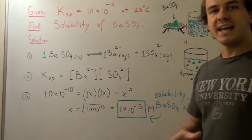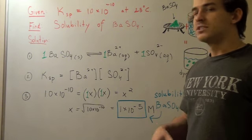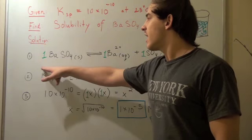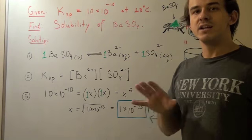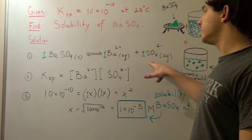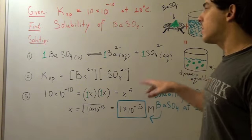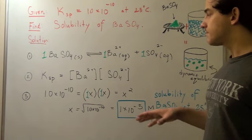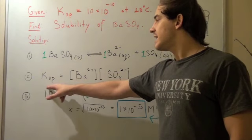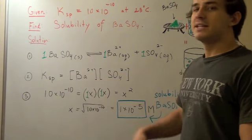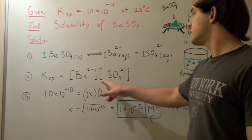The first step is to write the Ksp equation. This solid doesn't count in the equation. These aqueous ions count because they're both aqueous. Remember, we never count solids and we never count liquids. Therefore, Ksp equals the concentration of barium times the concentration of sulfate ion.